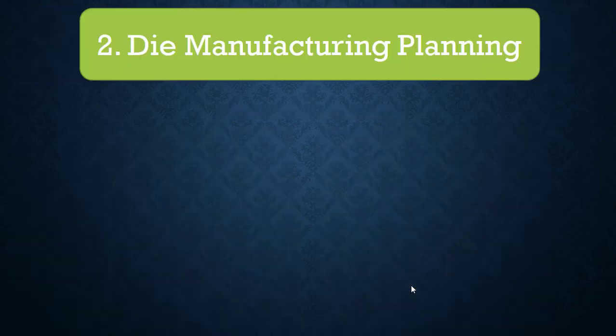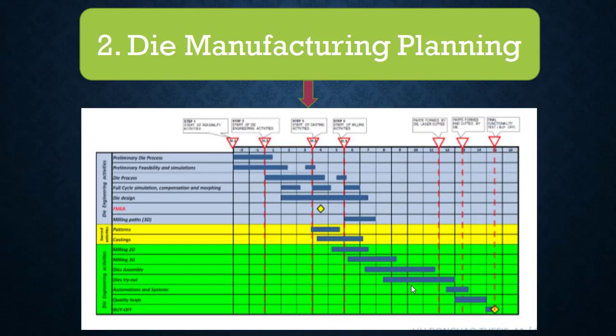Number 2: Die manufacturing planning is nothing but manpower planning, machinery planning, and supportive resources planning, in detail considering the delivery of the die to the customer. Chalking out a detailed work plan helps in better project management to utilize resources efficiently. Also, everyone on the team is aware of the delivery dates.